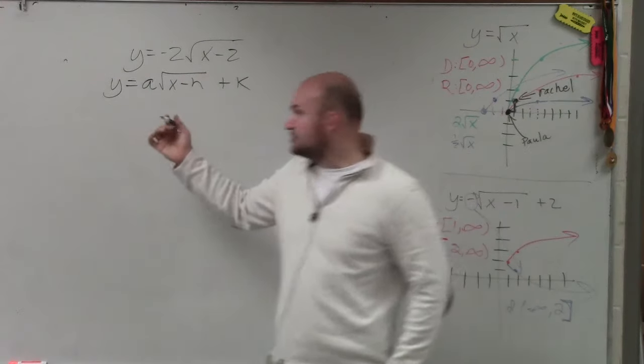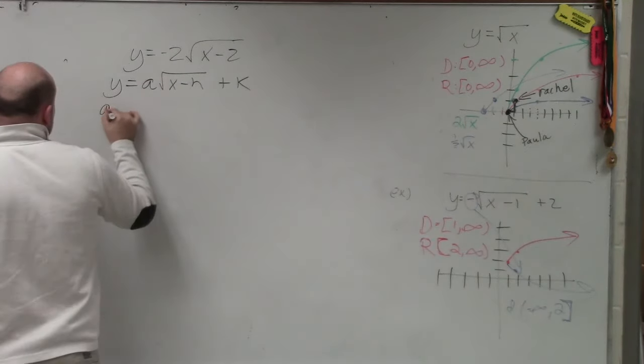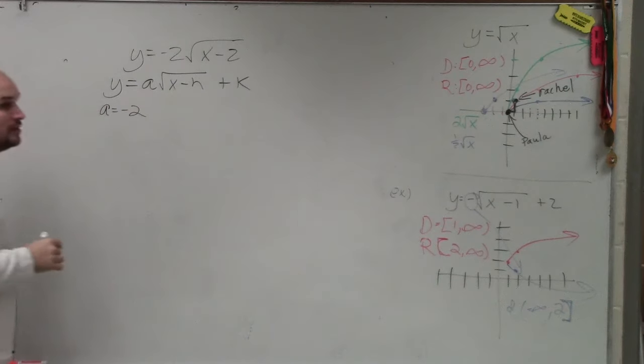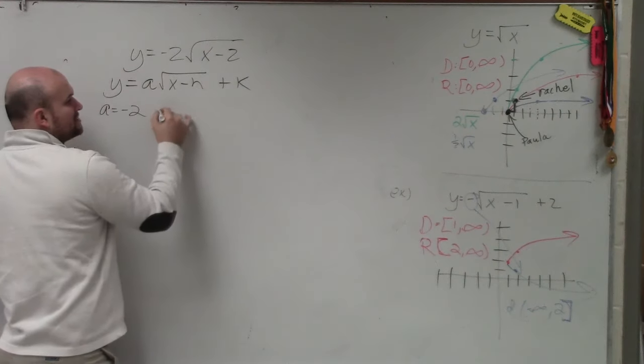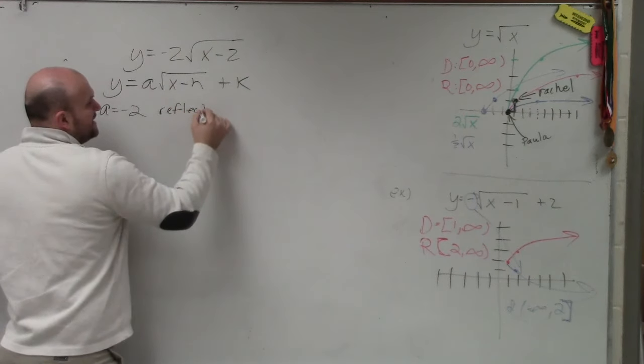So in this case, again, what I would just do is label each one. a is equal to a negative 2. All right, so we know that there's going to be a negative 2, right? So therefore, we know. So since a is negative, we know there's going to be a reflect the x-axis.